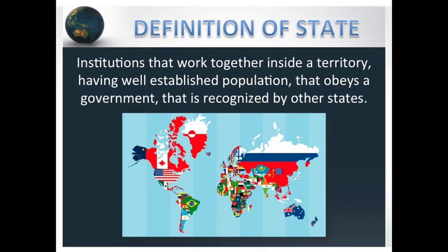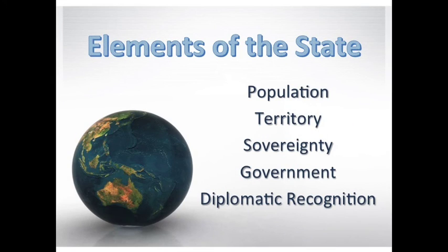First of all, we have the state. States are institutions that work together inside a territory, having a well-established population that obeys a government that is recognized by other states. The state has different elements: population, territory, sovereignty, government, and diplomatic recognition.